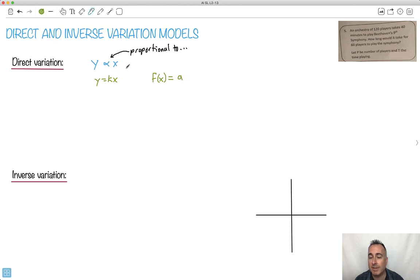We'll say equals some constant. Now, the IB likes to use the letter a, but it could be any constant, times x to the n. This is a generic form of a direct variation. This area here is just a constant of proportionality. So maybe you need to find it, but maybe you don't.